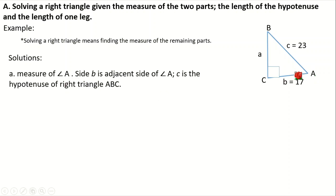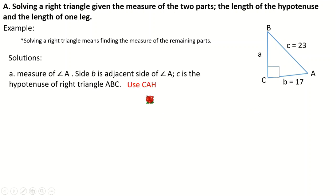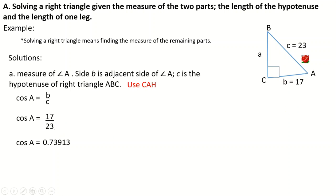Let us solve for angle A first. Since this is the angle we're looking for, angle A will be our theta. The adjacent side of angle A is side B, which is 17, and we also have the hypotenuse. Since we have the adjacent and the hypotenuse, we can use cosine. Cosine is equal to adjacent over hypotenuse, so cos A equals B over C. Substituting: cos A equals 17 over 23, and 17 divided by 23 gives us 0.73913.